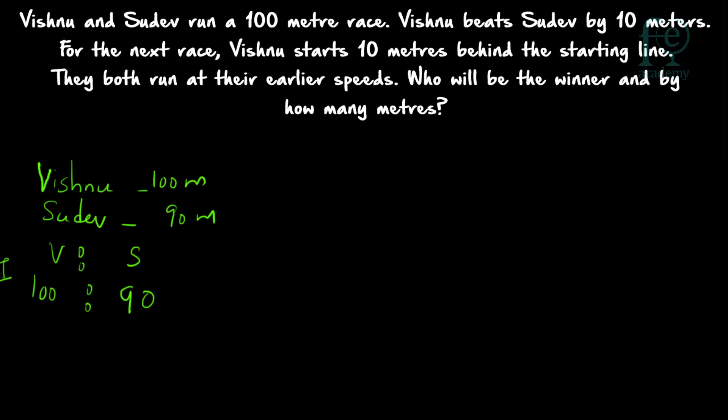When Vishnu completes the 100 meter race, Sudev is still 10 meters behind, so Sudev has completed only 90 meters. The ratio can be written as 100 is to 90. Now for the second race — Vishnu is starting 10 meters behind the starting line. So in the second race, Vishnu has to run 110 meters while Sudev has to run only 100 meters.